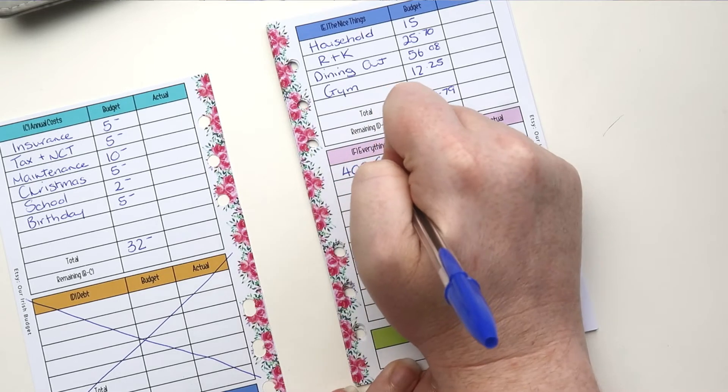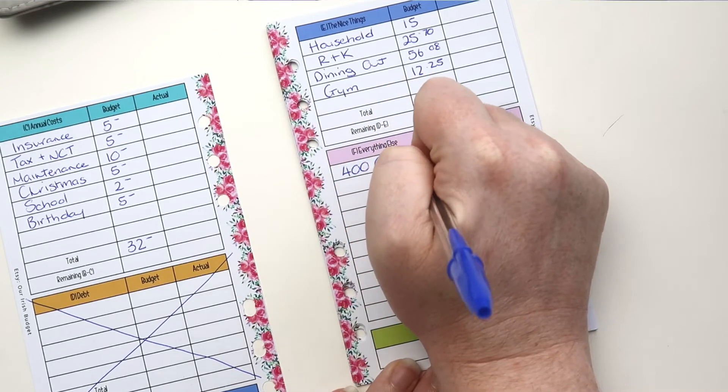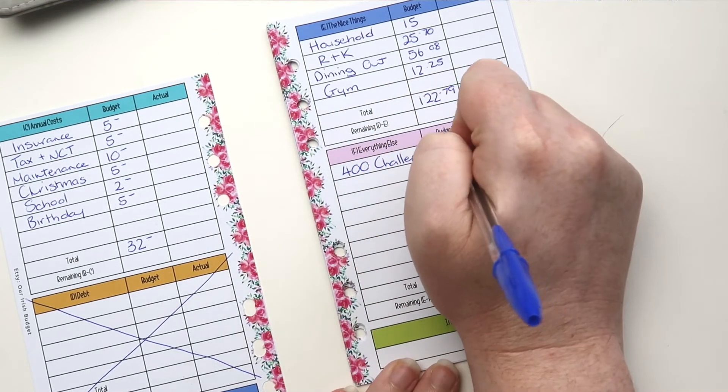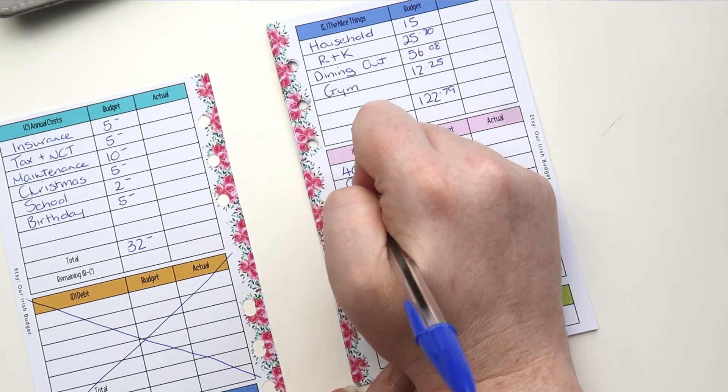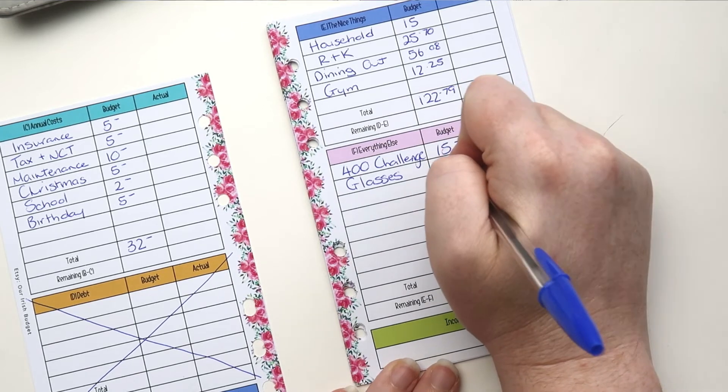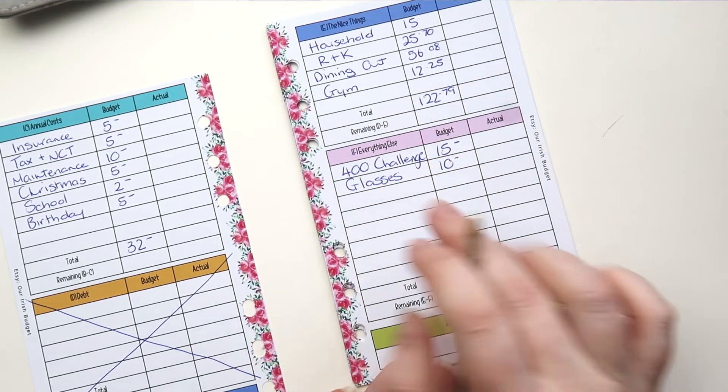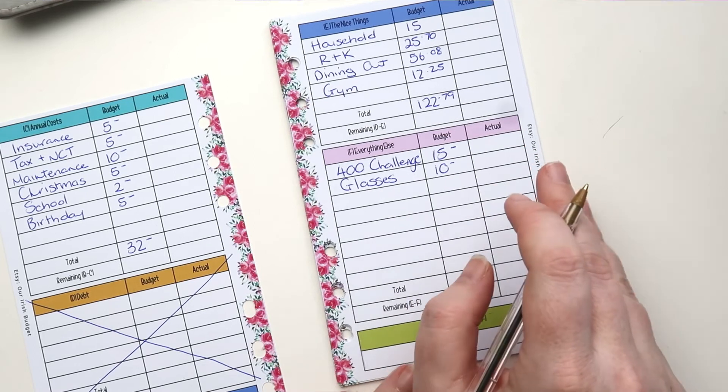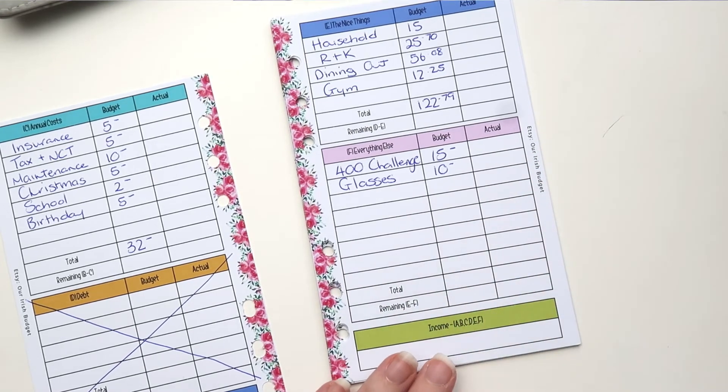So we're going to do the 400 challenge. We're going to put 15. We're going to do glasses. Ava actually has an appointment with the optician again later this month. I'm 100% sure she needs new glasses, because her frame, well, new frames anyways, because her frames are too small for her face.